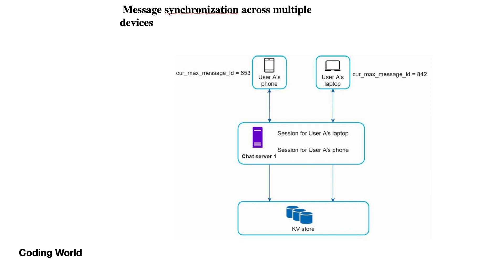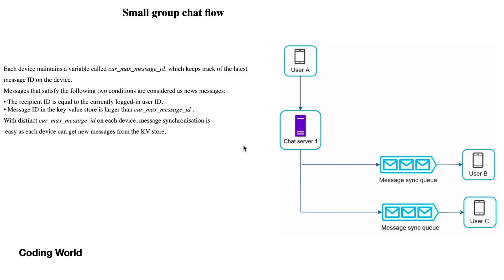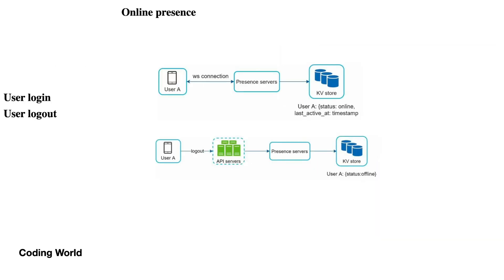For message synchronization across multiple devices — a scenario where a user is chatting from both a laptop and a mobile — user one is connected to chat server one, and when they push a message it is pushed to the respective users' queues. For a group of three users A, B, and C, when user A types a message in the group, that message is put into the queues of B and C respectively.